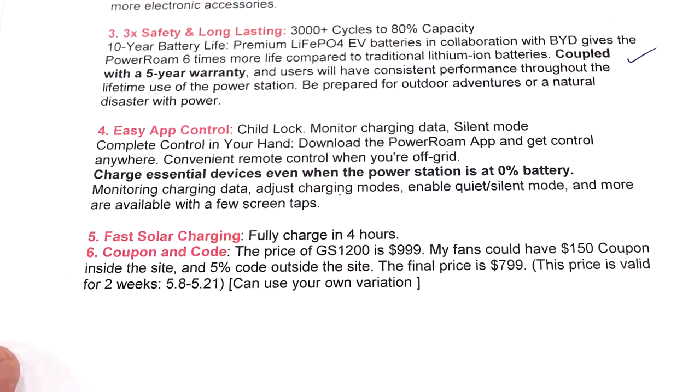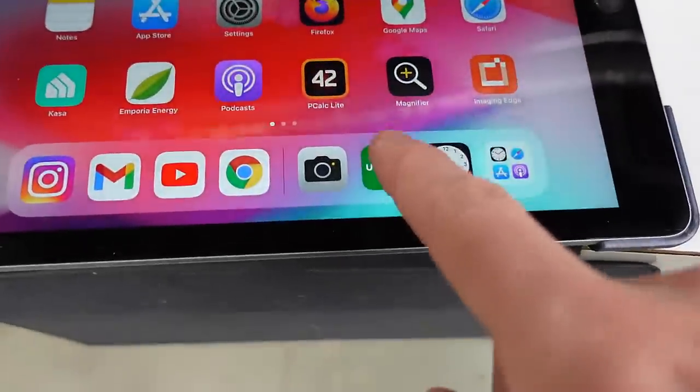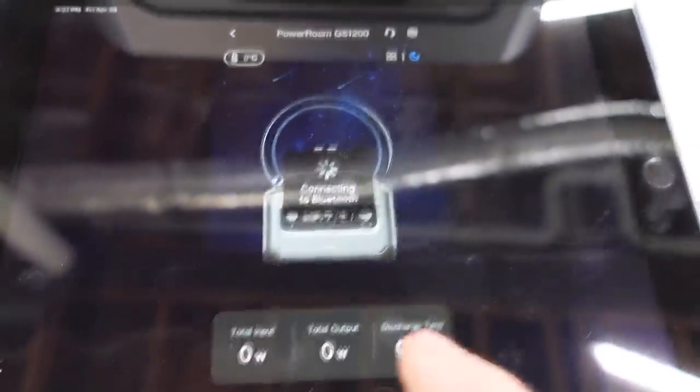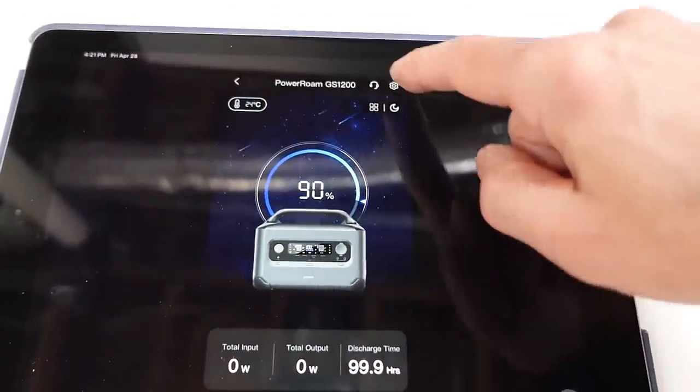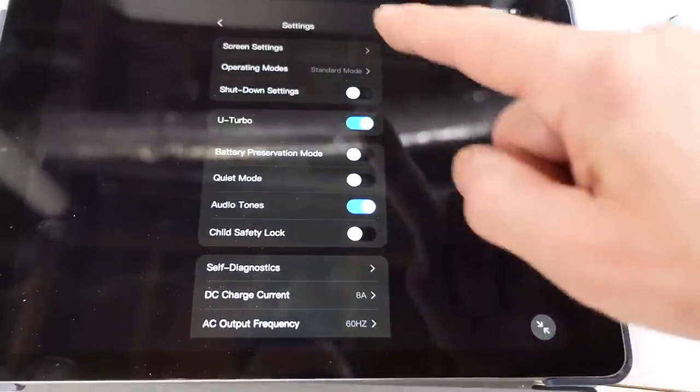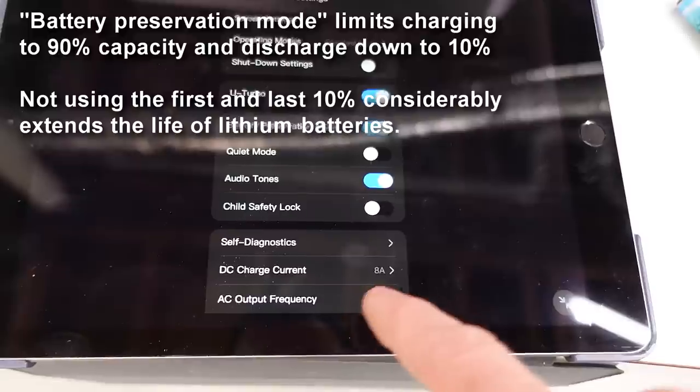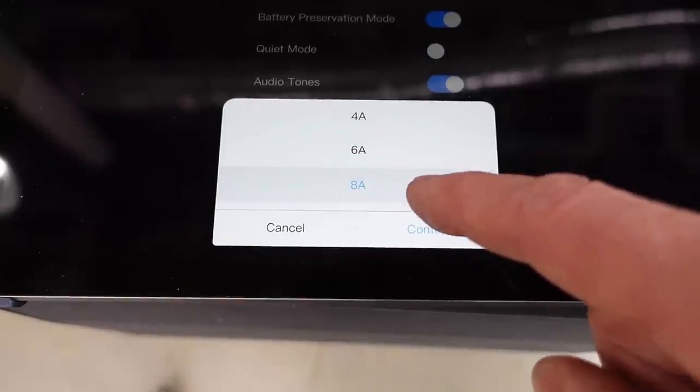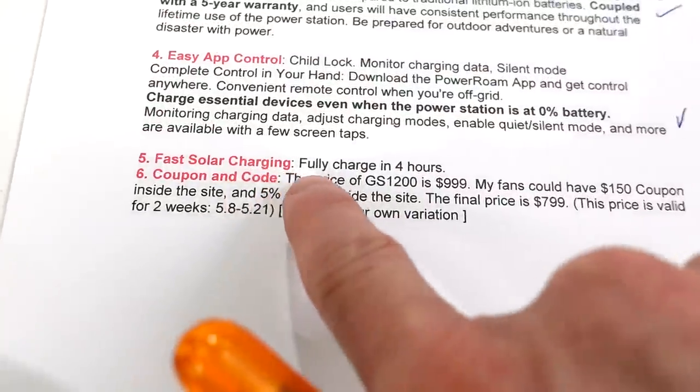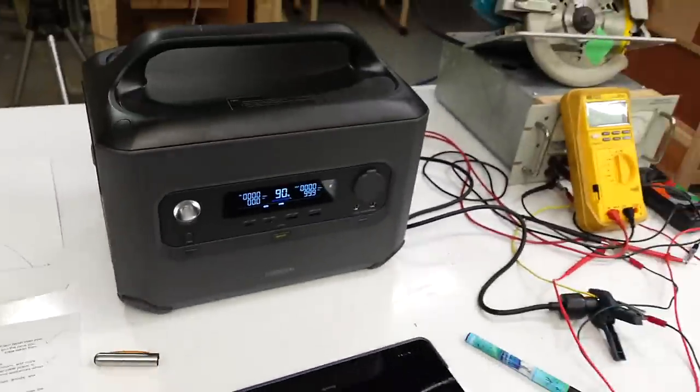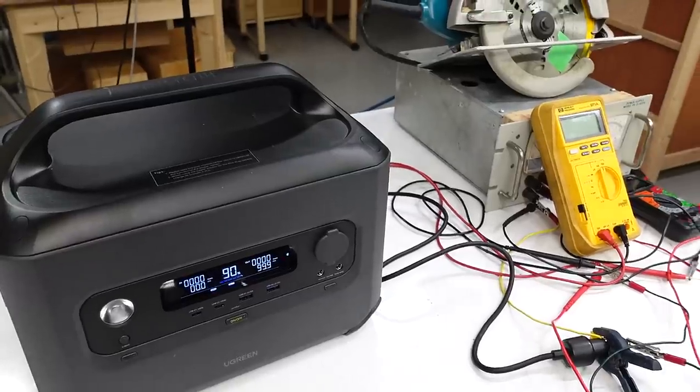Easy app control. There is a mobile app to go with this thing as well. It took me a while to realize but you need to turn the IOT thing on to connect. I'm connecting to it via Bluetooth because Wi-Fi often isn't available in places where you have no power. There, it says 90% which indeed it has. Mostly you can see what's going on here and you can change some settings like child protection, battery preservation mode. Actually I kind of like this one. Or I can change the DC charging current because if I'm charging off a car for example I might want to set that to something less than 8 amperes. Charge essential devices even when power station is at zero battery. Fast solar charging, fully charged in 4 hours. I don't have solar cells and my power supply is not beefy enough to crank it quite that much but I think I did demonstrate the solar charging feature even without solar cells.